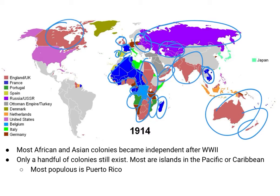But most of those African and Asian colonies become independent after World War II. There's only a handful of colonies that still exist — most of them tend to be islands in the Caribbean, or in Southeast Asia and the South Pacific area. The most populous colony that still exists is Puerto Rico. Puerto Rico is still technically a colony of the United States. There has been some call for Puerto Rico to become the 51st state, but that hasn't gained a whole lot of traction, and so currently they are still considered just a colony.